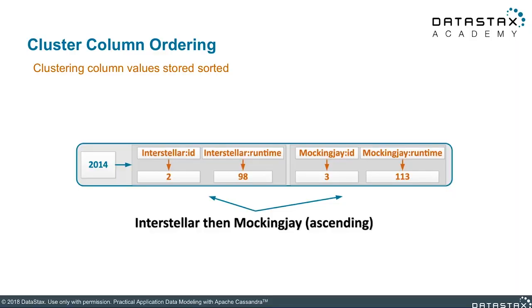You have your clustering column values inside of the same partition. That order — Interstellar, then Mockingjay — is ascending order, in the collating order for UTF-8. So I goes before M. The name imparts some sort of sorting. If you think of all the different types and the kind of ordering you can get from them — for instance, an integer or a date — now you're starting to work with data and ordering the data before you do any work with it.